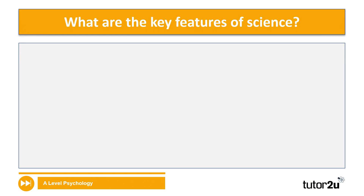We keep mentioning the term science, and part of understanding whether psychology is a science or not is becoming familiar with the key features that make something a science. This is crucial for your research methods learning, but also for your knowledge and evaluation of approaches. Let's take a look at some of those key features now.